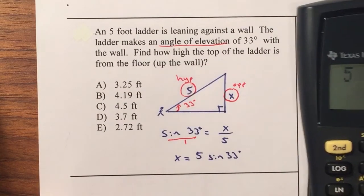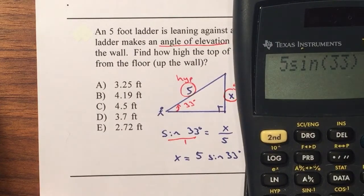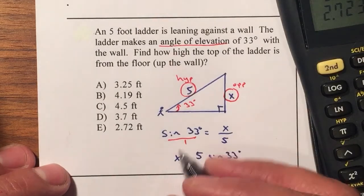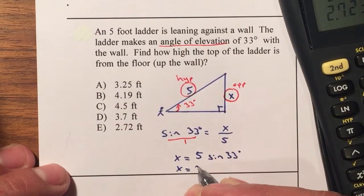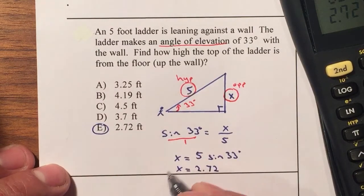5 multiplied by the sine of 33 degrees and that will be 2.72 so X is equal to 2.72. Therefore your answer is letter E.